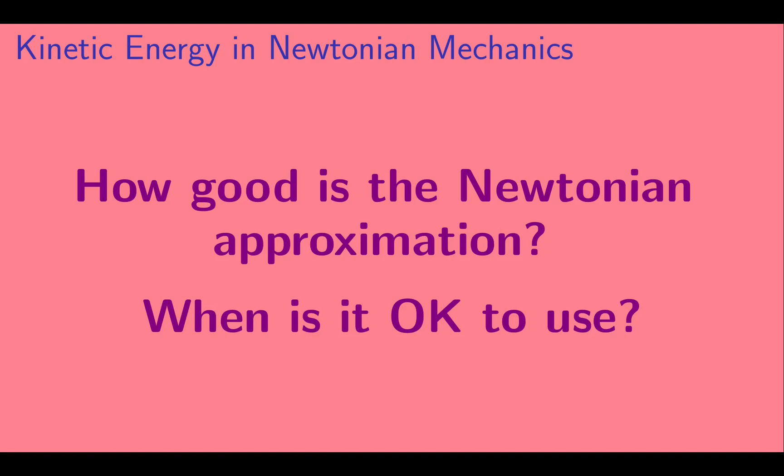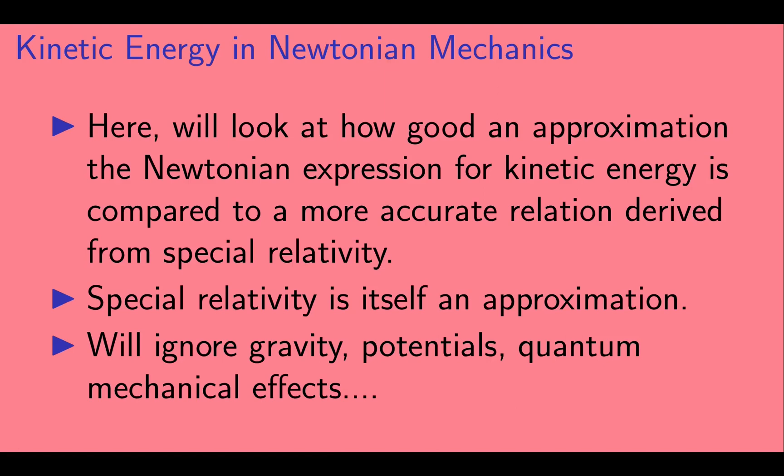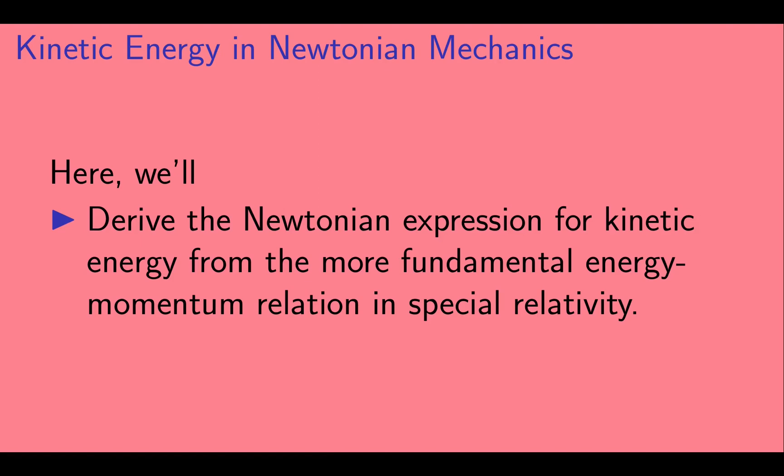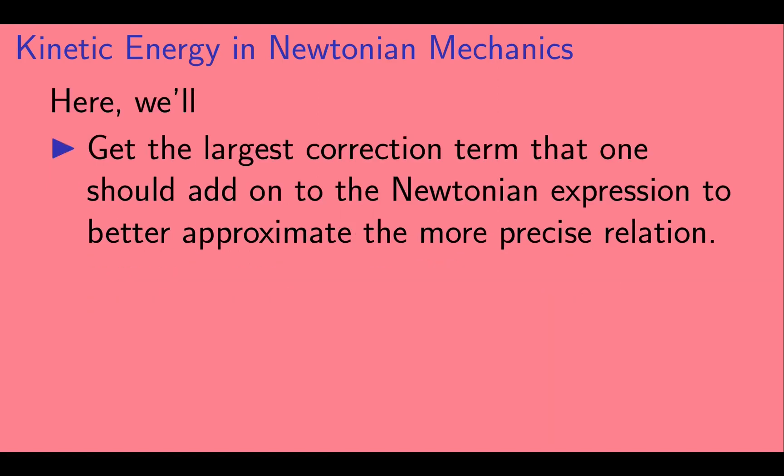We're going to look at how good an approximation the Newtonian expression for kinetic energy is compared to a more accurate relation derived from special relativity. In doing so, we should keep in mind that special relativity is itself an approximation — we'll be ignoring gravity, potentials, quantum mechanical effects, etc., which we take to be even smaller effects than those of special relativity. Newtonian mechanics is a limiting case of special relativity, so we're going to derive the Newtonian expression for kinetic energy from the more fundamental energy-momentum relation in special relativity. Additionally, we'll get the largest correction term that one should add on to the Newtonian expression to better approximate the more precise relation.